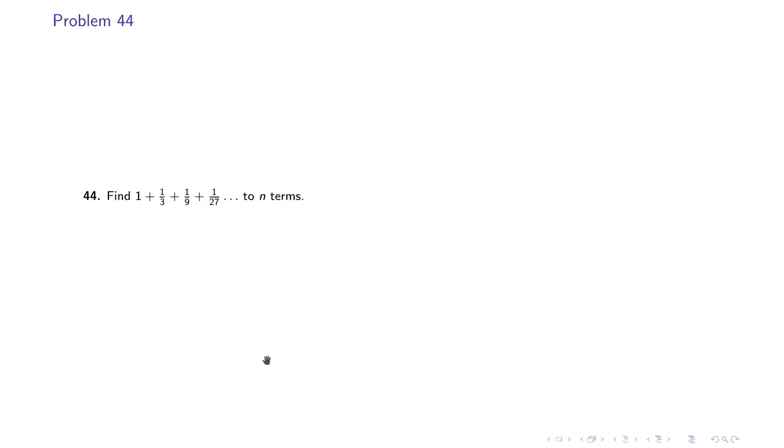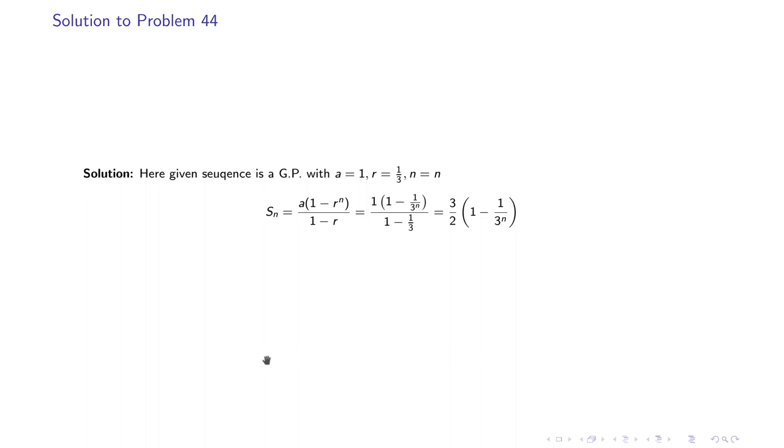Problem number 44 says that find 1 + 1/3 + 1/9 + 1/27 and so on to n terms. In this case, first term is 1, common ratio is 1/3, and number of terms is n. So the final sum of this geometric progression is (3/2)(1 - (1/3)^n).